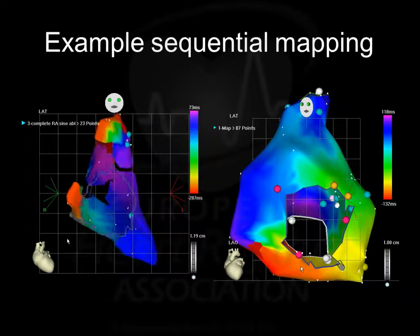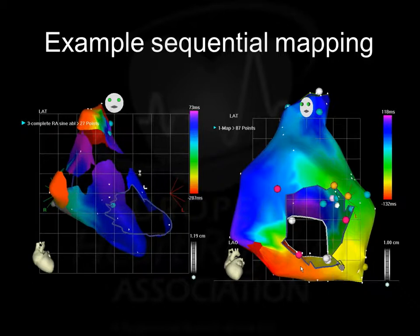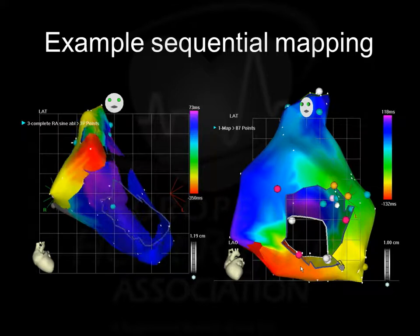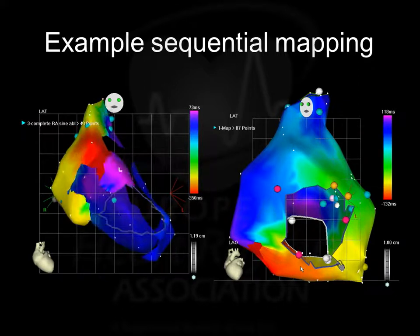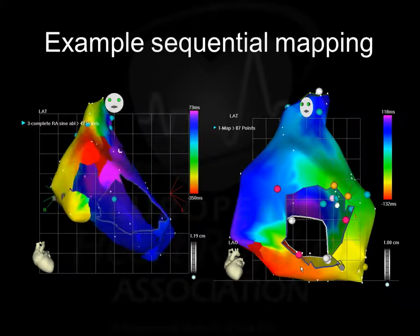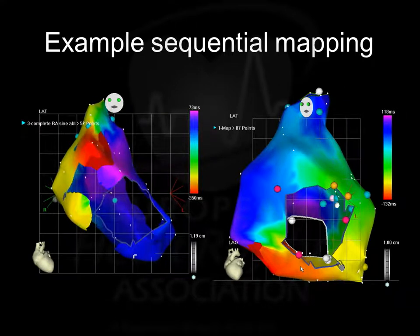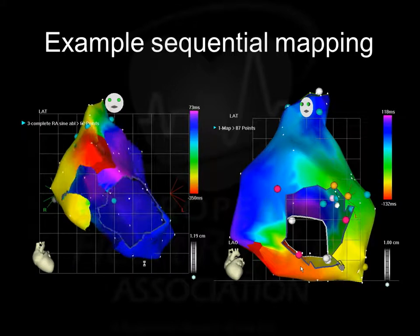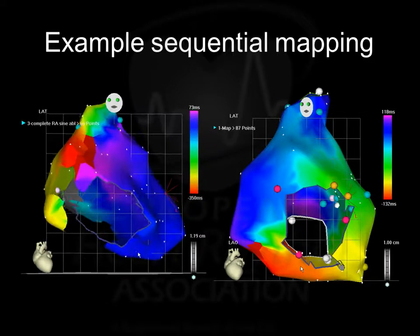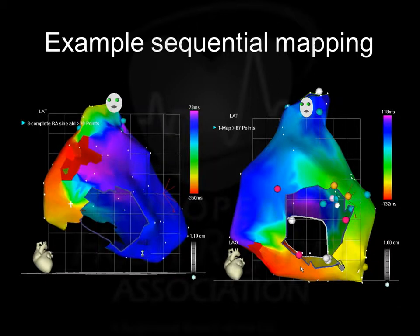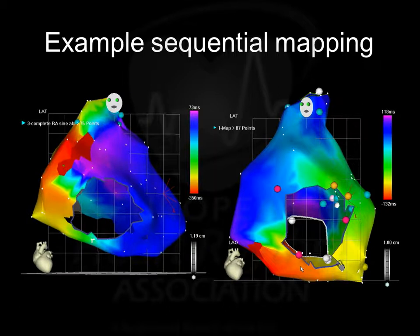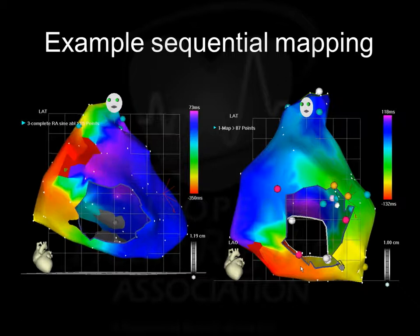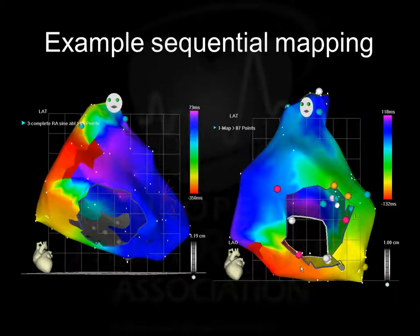When you do sequential mapping, the timing reference is very important. You start collecting points, and the more points you have, the more accurate your map gets. You can mark anatomical sites — the SVC and tricuspid annulus, for example. Every point you take is color-coded with regard to its neighbors and all the points in the map. The earliest point, whatever you define as early, is red; green, blue, and purple are late. You need to find out where early and late meet, which gives a good hint whether it's a reentry or not — but you need to have the window of interest set correctly.